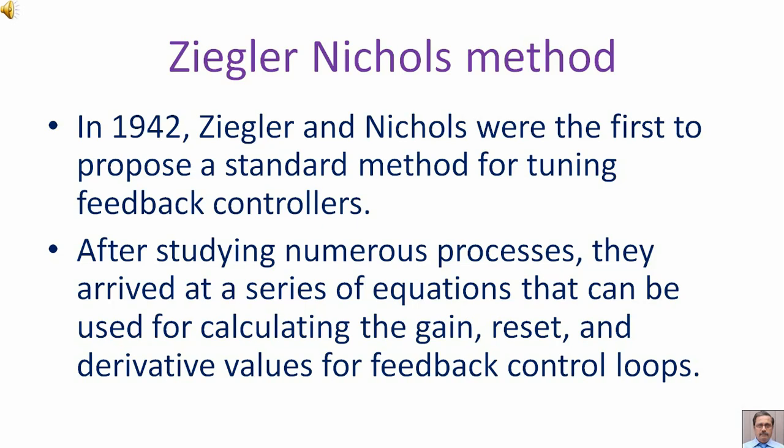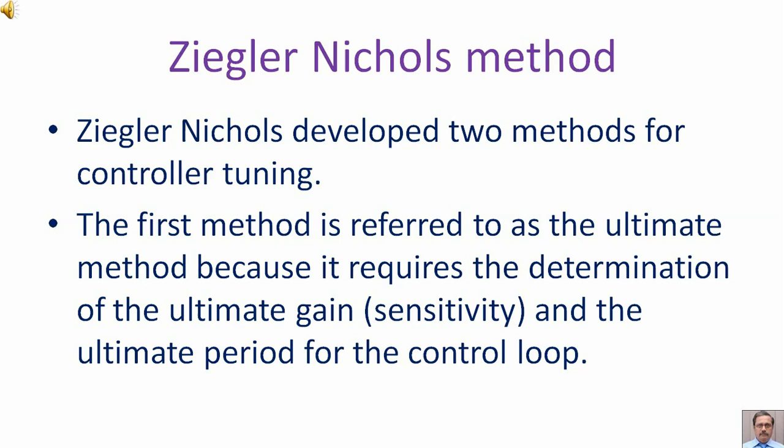Ziegler-Nichols developed two methods for controller tuning. The first method is referred to as the ultimate method because it requires the determination of the ultimate gain, sensitivity, and the ultimate period for the control loop.